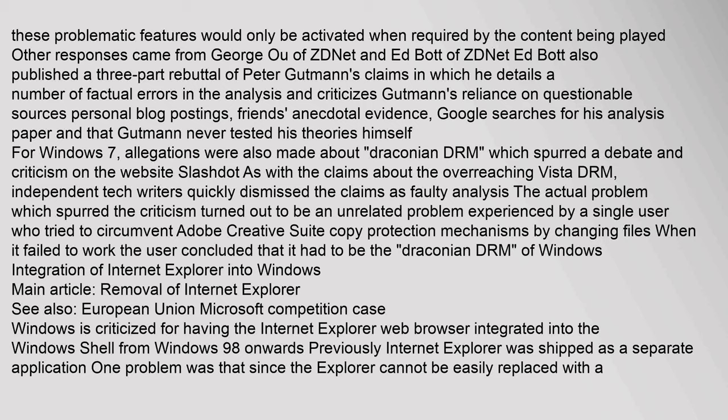For Windows 7, allegations were also made about draconian DRM, which spurred a debate and criticism on the website Slashdot. As with the claims about the overreaching Vista DRM, independent tech writers quickly dismissed the claims as faulty analysis. The actual problem turned out to be an unrelated issue experienced by a single user who tried to circumvent Adobe Creative Suite copy protection mechanisms by changing files when it failed to work, and concluded it had to be the draconian DRM of Windows.